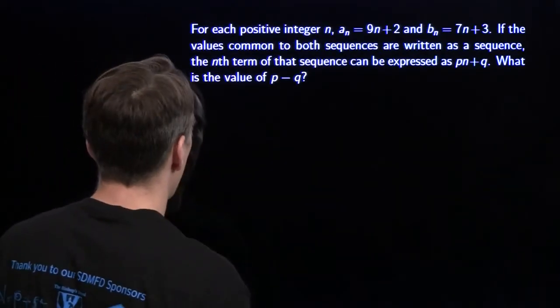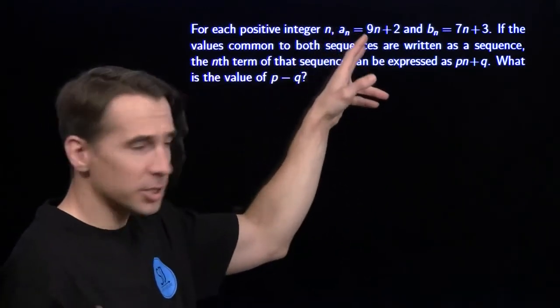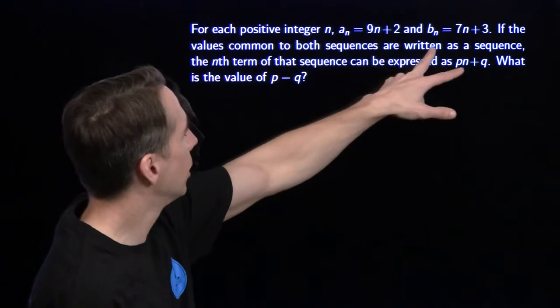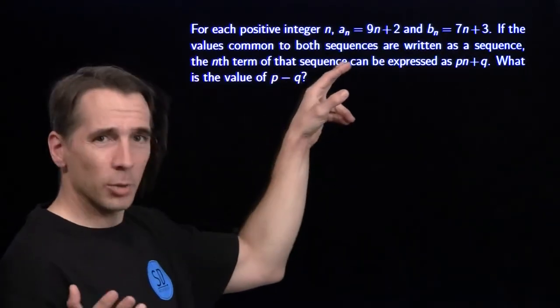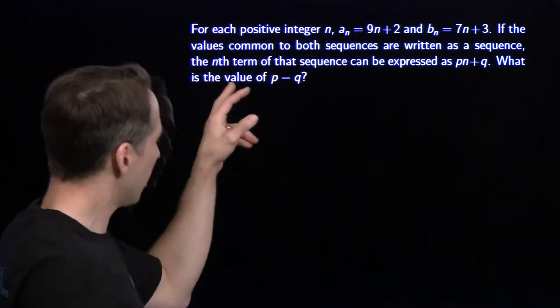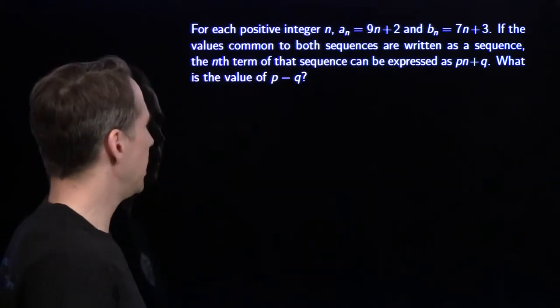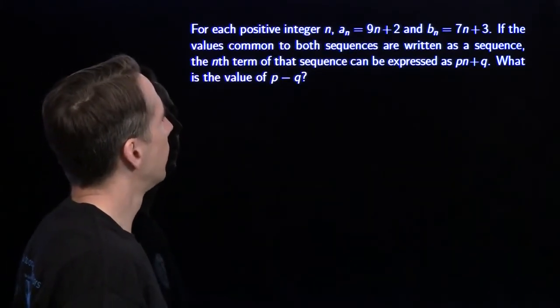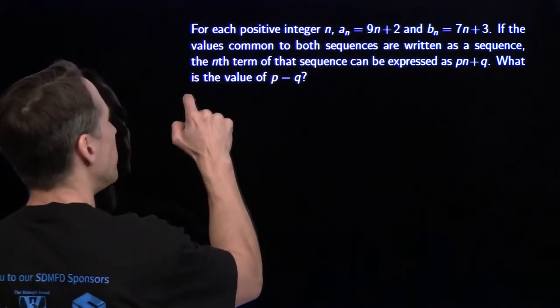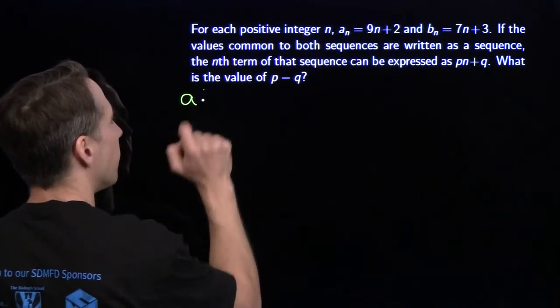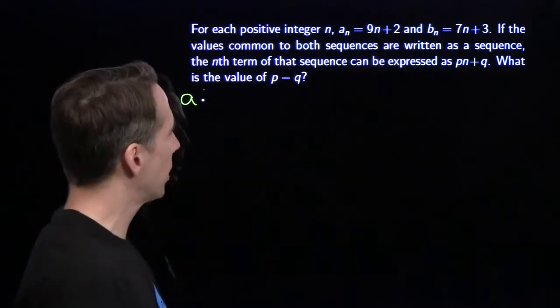Alright, here we go. For each positive integer n, a sub n, that's a sequence, is 9n plus 2, b sub n is 7n plus 3. And the values common to both sequences, we make another sequence out of those. The nth term of that new sequence is pn plus q. And we have to find p minus q. I don't see anything smart to do with these, so I'm going to do the stupidest thing I can think of. I'm just going to start writing stuff down. I'm going to write down the sequences. Let's see if I notice anything interesting.